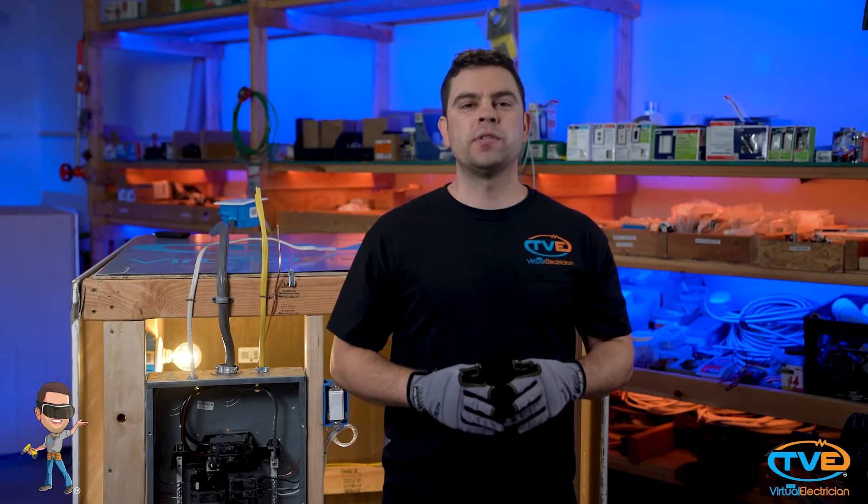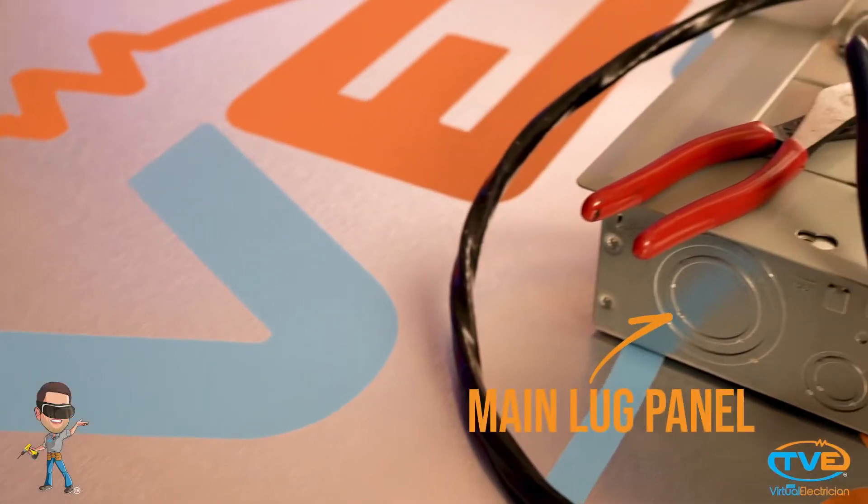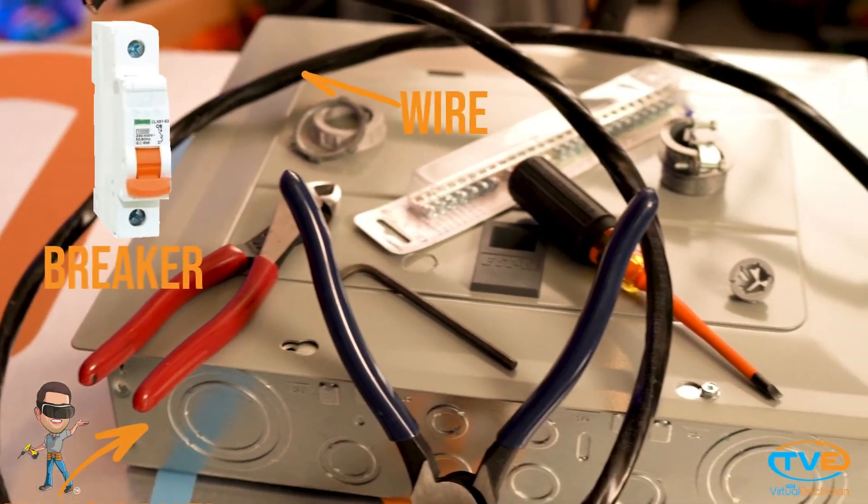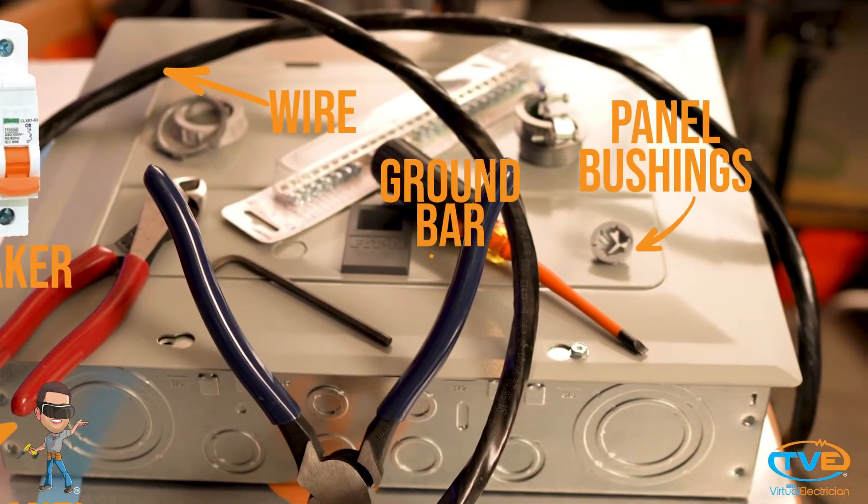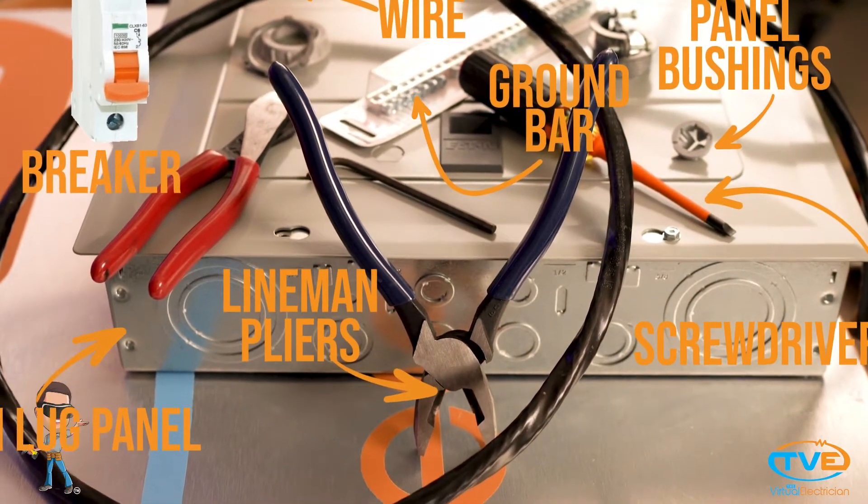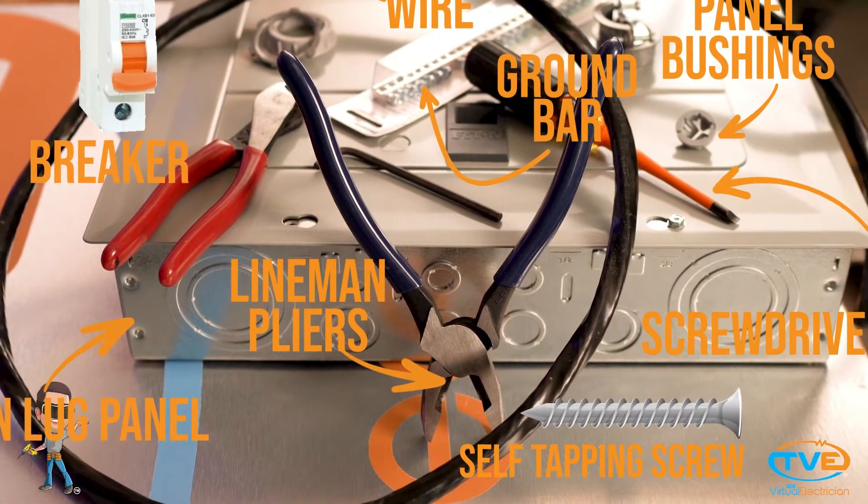In this video, we are going to install a sub-panel. You will need a main lug panel, breakers, wire, panel bushings, ground bar, screwdriver, linesman's pliers, and self-tapping screws.